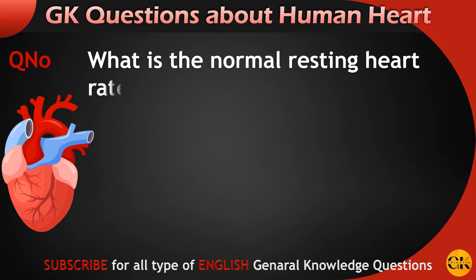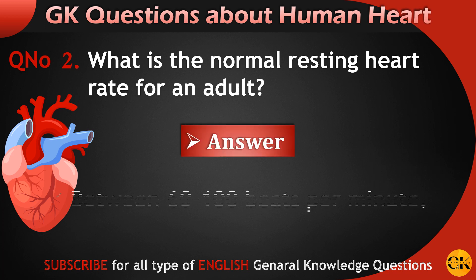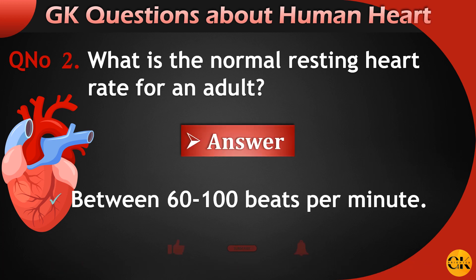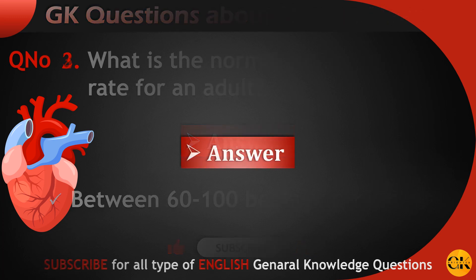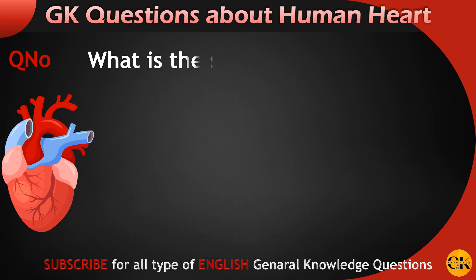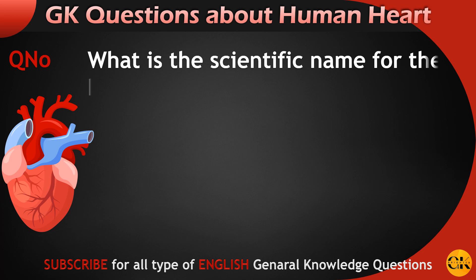What is the normal resting heart rate for an adult? Between 60 to 100 beats per minute.